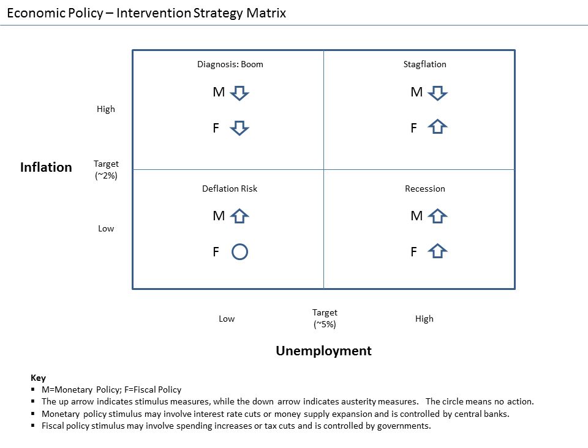The IS-LM model gives the underpinnings of aggregate demand. It answers the question: what is the quantity of goods demanded? This model represents what combination of interest rates and output will ensure equilibrium in both the goods and money markets.